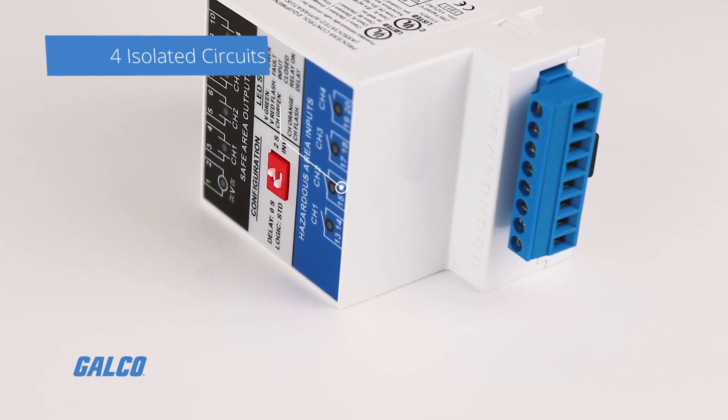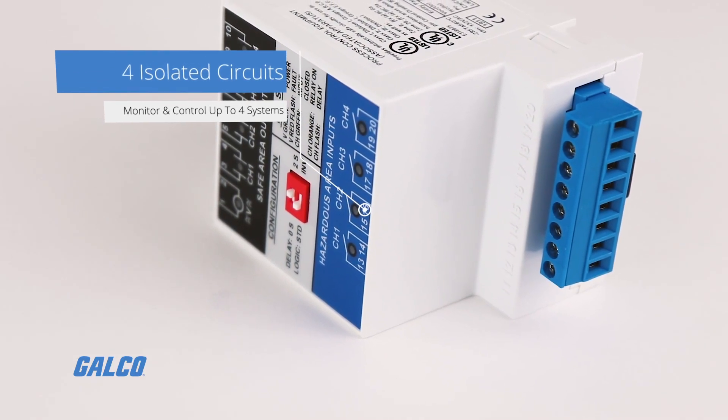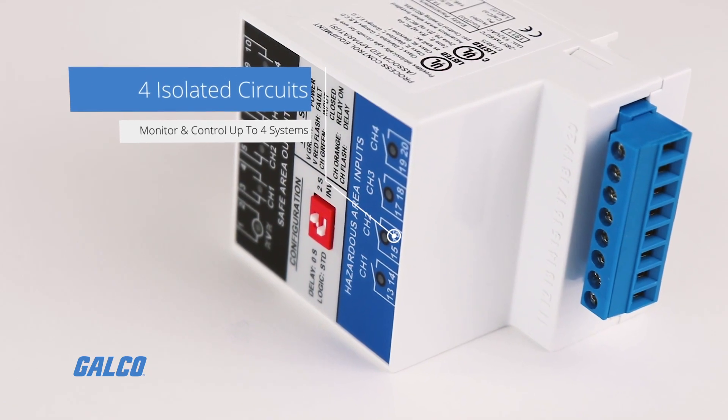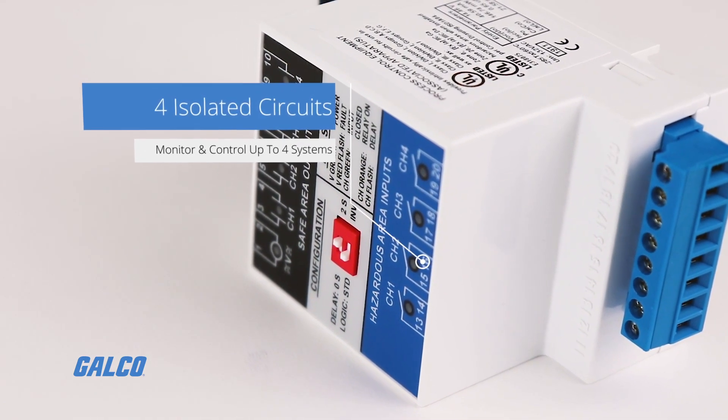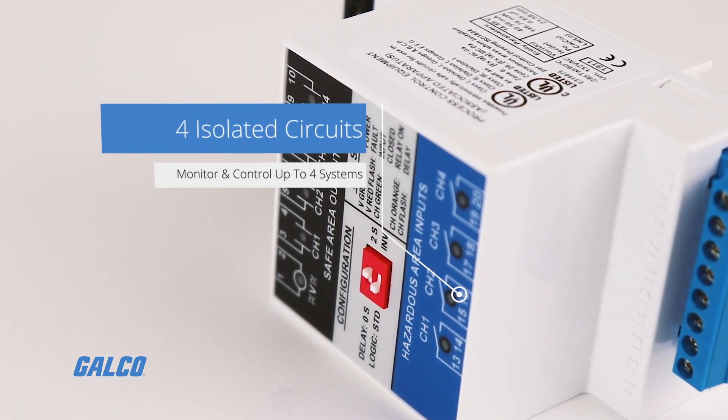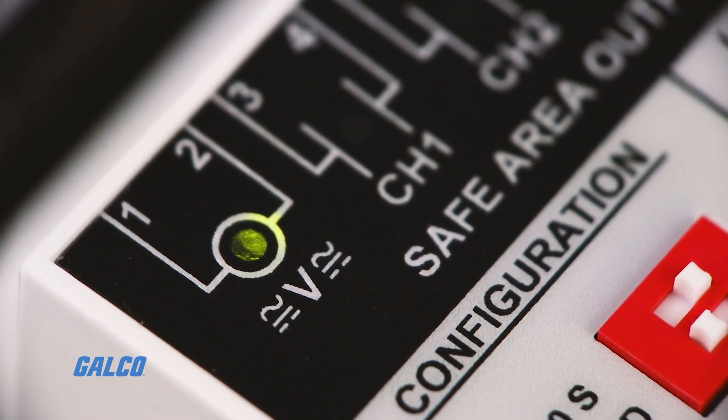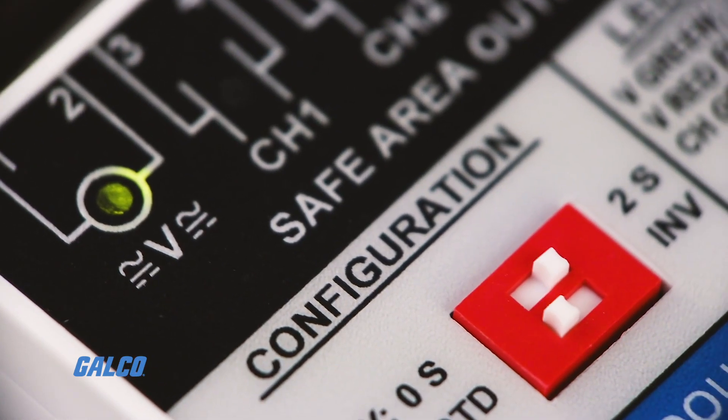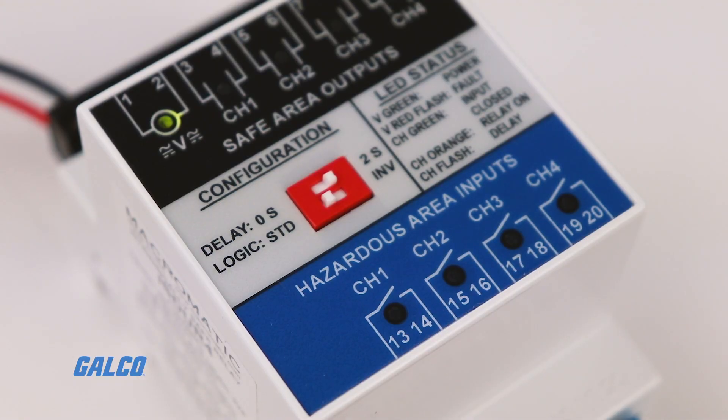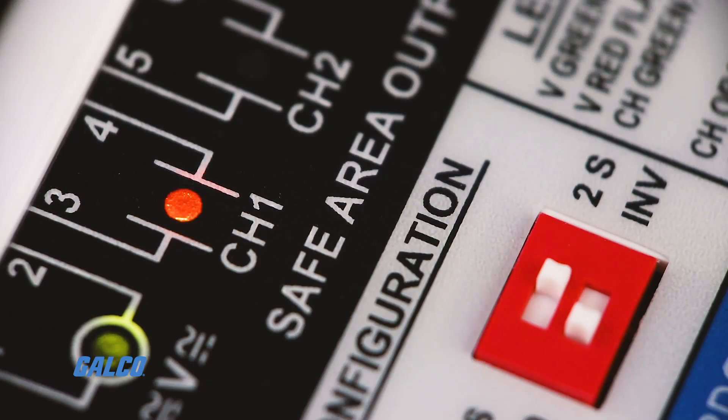Each ISD series product consists of four intrinsically safe inputs and four corresponding electromechanical relay outputs. With voltage applied, the VLED will illuminate green. When the input device is closed, the input LED will illuminate green. When the output relay is energized, the output LED will illuminate orange.